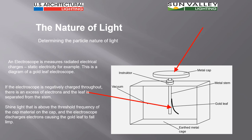But if what we do now is to shine light above the threshold frequency of the cap material on that cap, then the electroscope starts to discharge electrons and the gold leaf falls limp to the side of the stem. That's another way of identifying the fact that there is electron flow going on in this process.